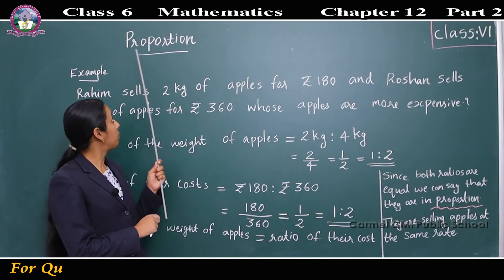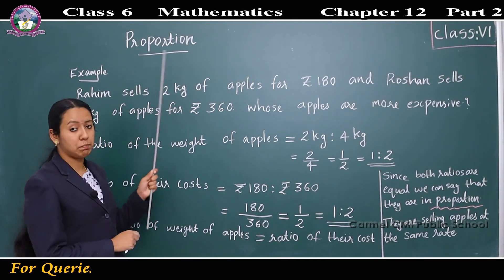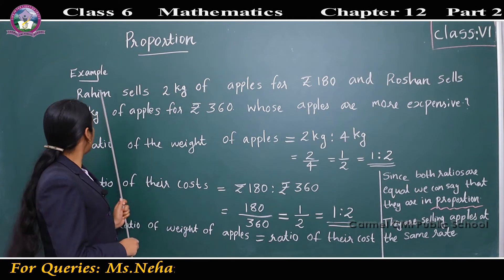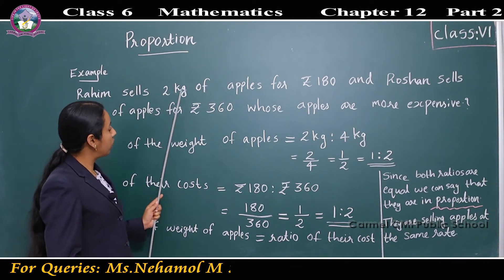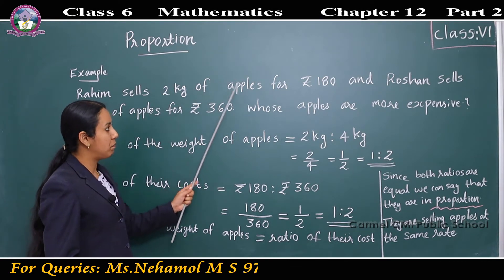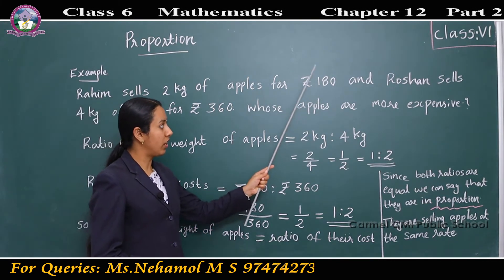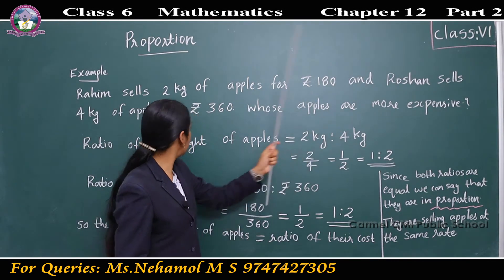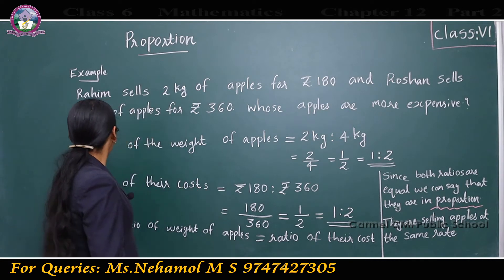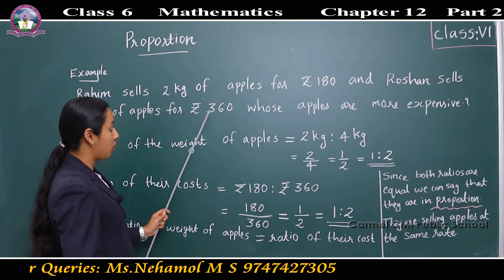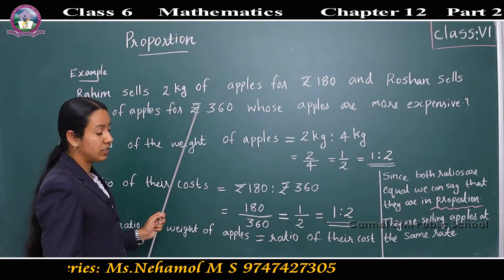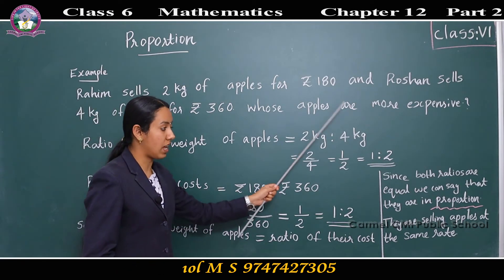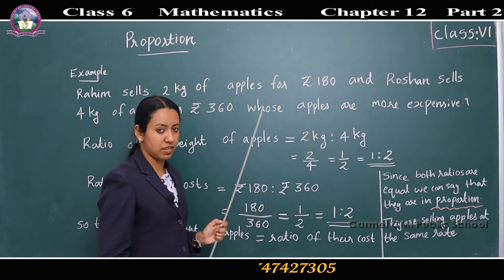Our next topic is proportion. We can go through an example. Rahim sells 2 kilograms of apples for rupees 180 and Roshan sells 4 kilograms of apples for rupees 360. Whose apples are more expensive?